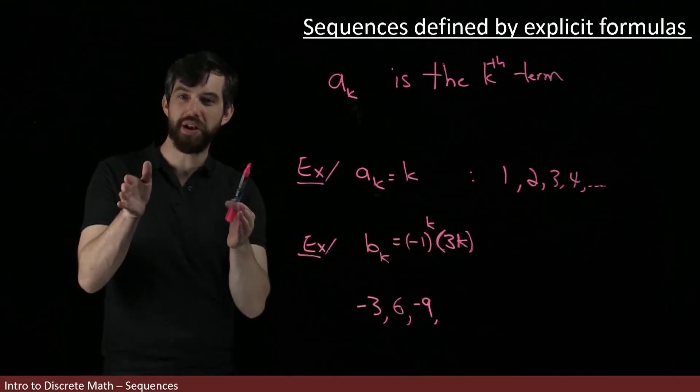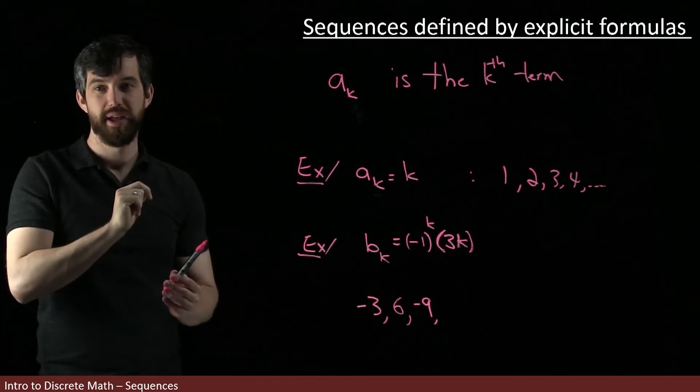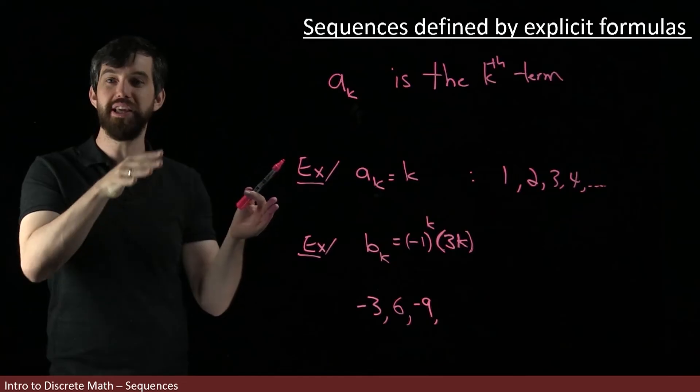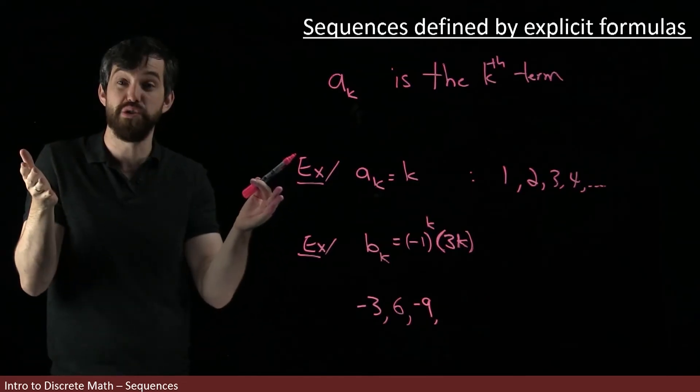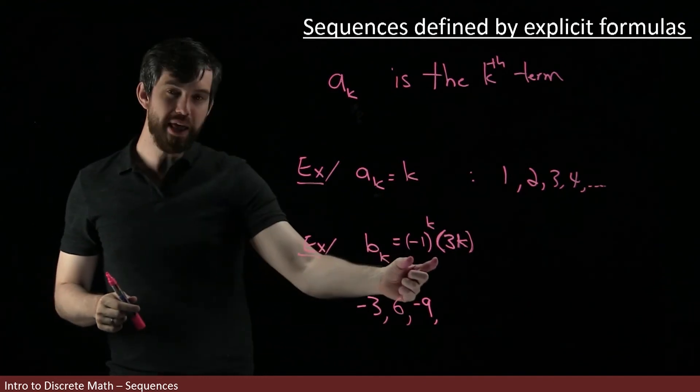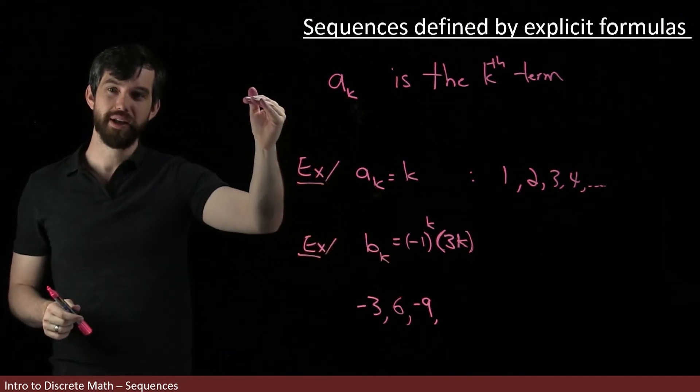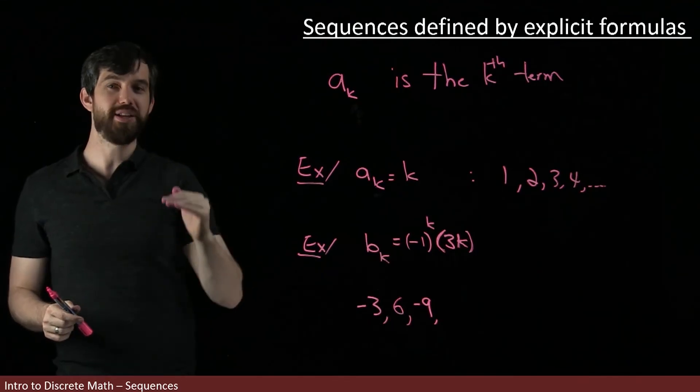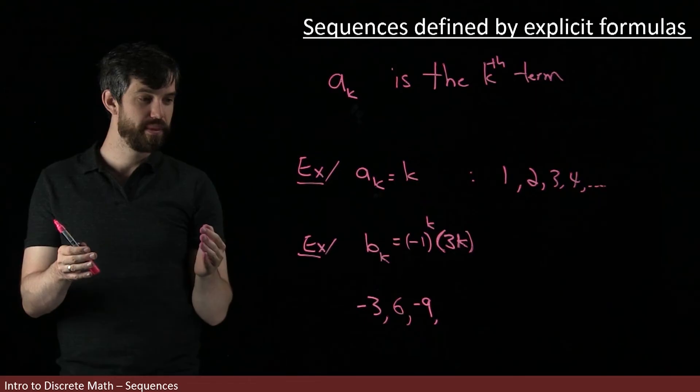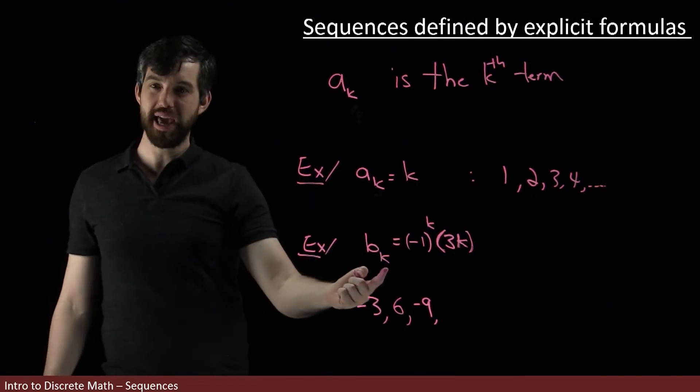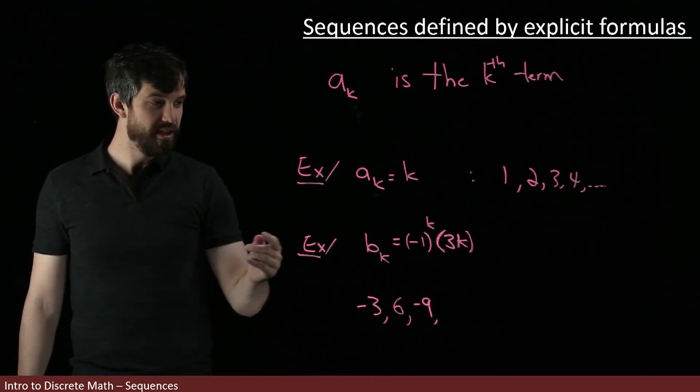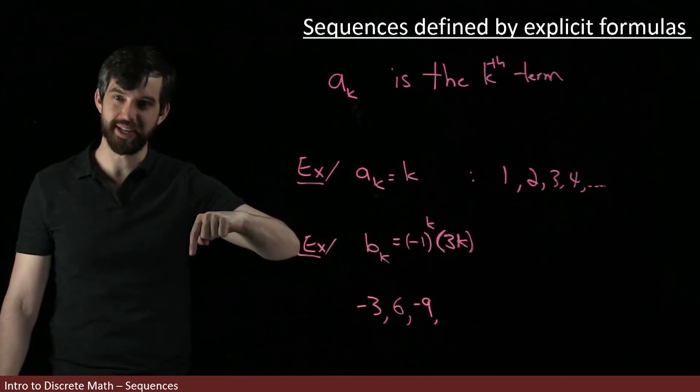And then the interesting one is this minus one to the k, because minus one to the k depends on whether that k is even or odd. When it's even, minus one to an even power, all of those are going to be just giving out the value of one. Minus one squared is one, minus one to the fourth is one. But if I take minus one to an odd power, like minus one to the one, or minus one to the three, or minus one to the five, all of those are going to give you a negative sign. So as my k goes up, one, two, three, four, it keeps alternating between whether it's odd or even. So I get a minus sign, and then I don't get a minus sign, then I get a minus sign, and I don't get a minus sign.